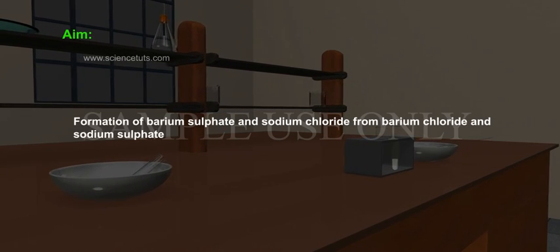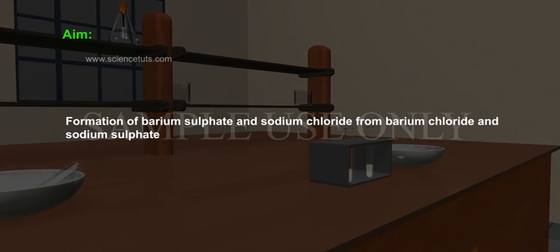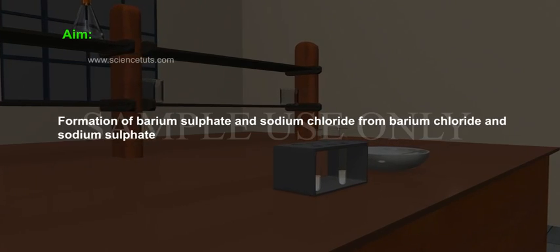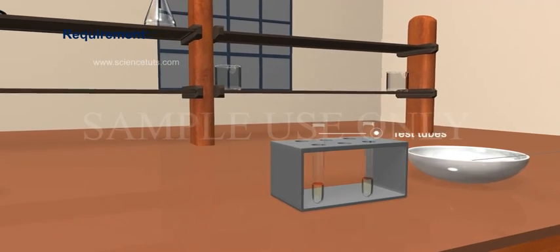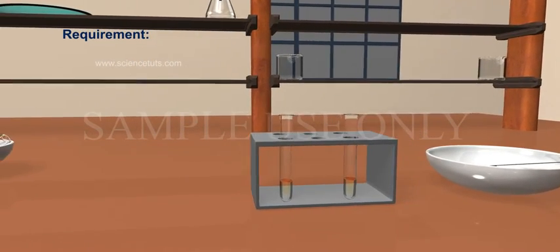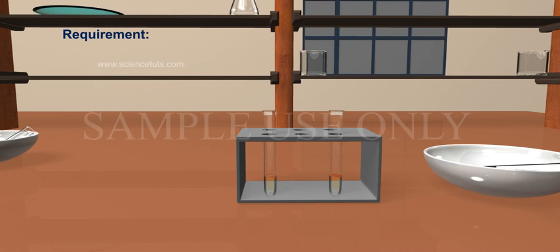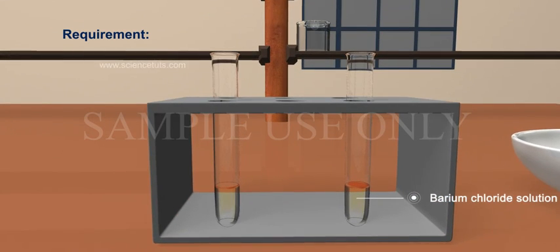Aim: Formation of barium sulfate and sodium chloride from barium chloride and sodium sulfate. Requirements: Test tubes, sodium sulfate solution, and barium chloride solution.